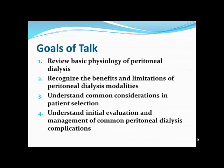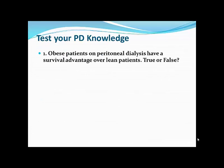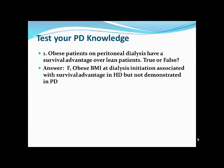Hopefully everybody has their coffee. A few knowledge-testing questions to start. Obese patients on peritoneal dialysis have a survival advantage over lean patients on peritoneal dialysis — true or false? There is a survival advantage for morbidly obese patients in hemodialysis, but the same has not been shown for peritoneal dialysis. Lean patients have lower survival for both PD and HD if they initiate dialysis with a BMI less than 20.